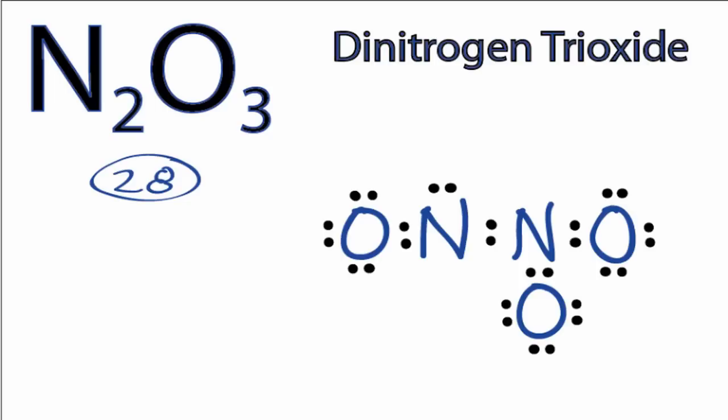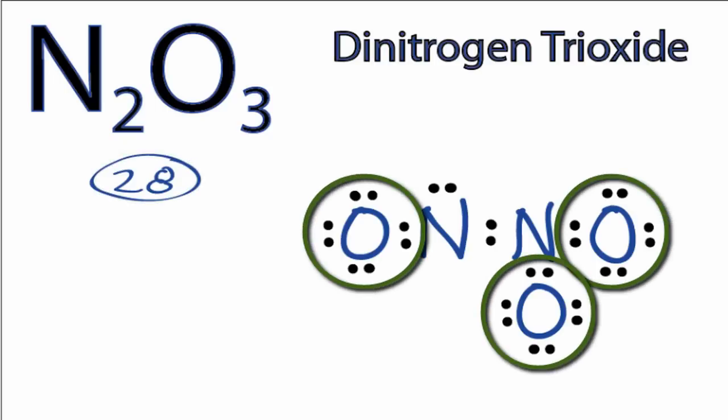So we've used all 28 valence electrons, and you can see the oxygens, they all have 8 valence electrons, so their outer shells are full.